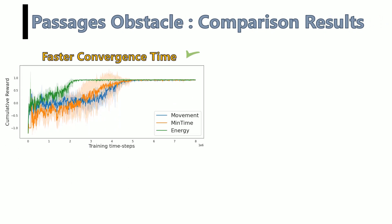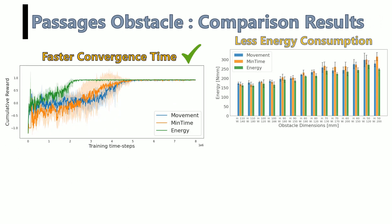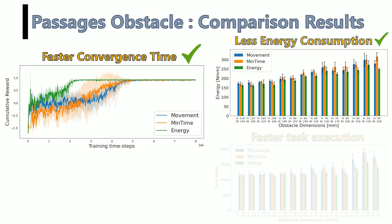Also, in this environment, the energy-based reward outperformed the movement and minimum-time-based rewards in terms of convergence time and the performance of the trained agent.